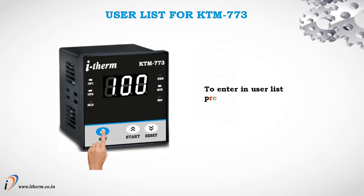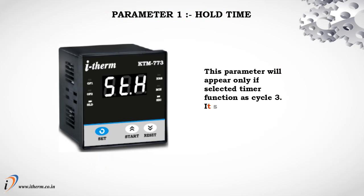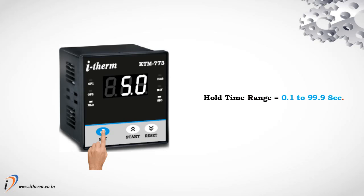User list for KTM-773. To enter the user list, press and release the set key once. Parameter 1: Hold Time. This parameter will appear only if the selected timer function is cycle 3. It sets the hold time between output 1 and output 2 in cycle 3. Hold time range: 0.1 to 99.9 seconds.